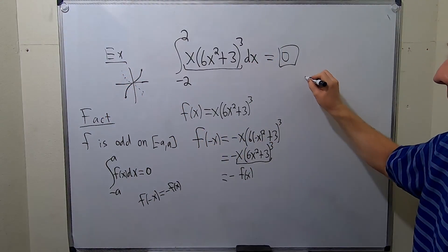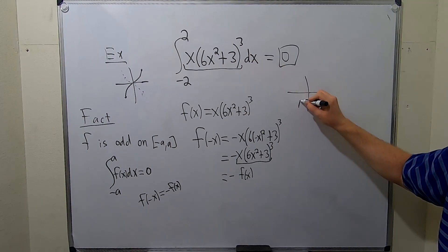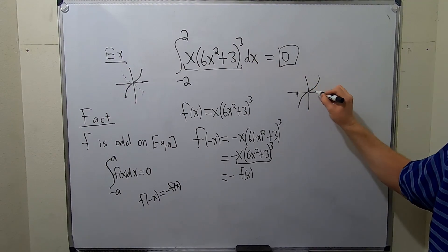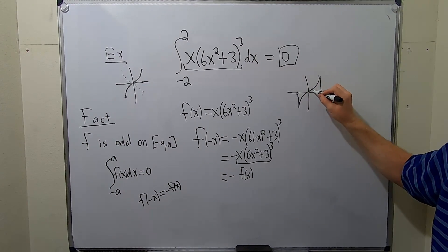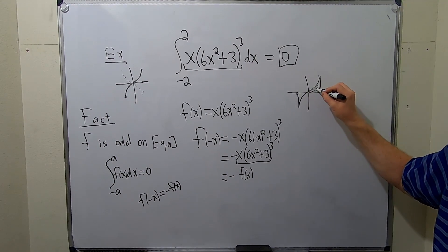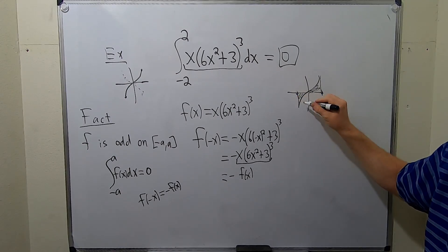So why should this make sense? Well, let's say you were integrating this and you were going from here to here. If it's symmetric, this area here is the same as this area here, except this has a negative in front of it.